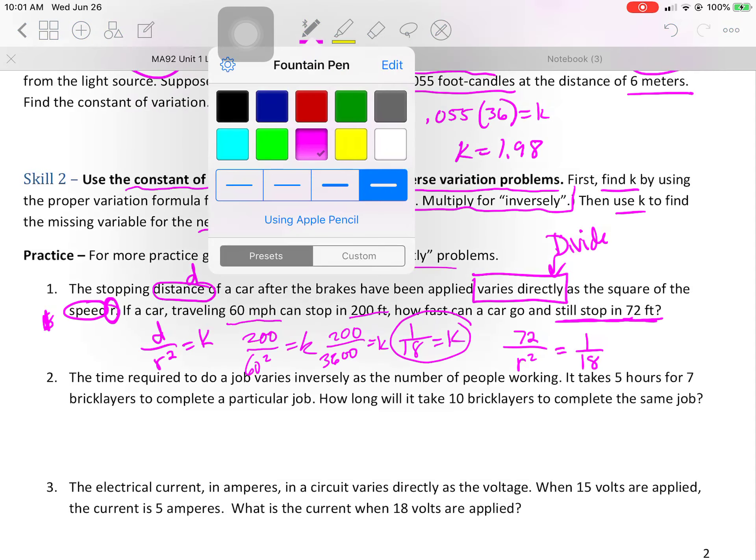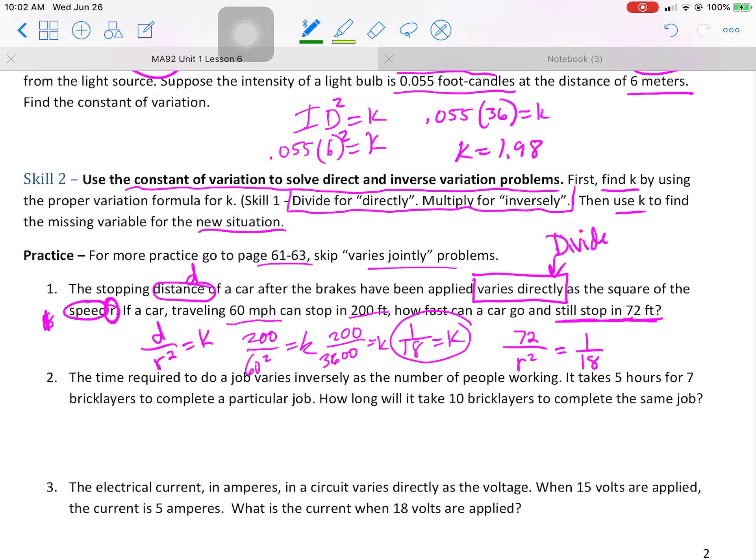This is where we're going to cross multiply. So this right here is going to be 72 times 18. That's going to equal 1296. Okay. So it's going to be 1296 equals r squared.